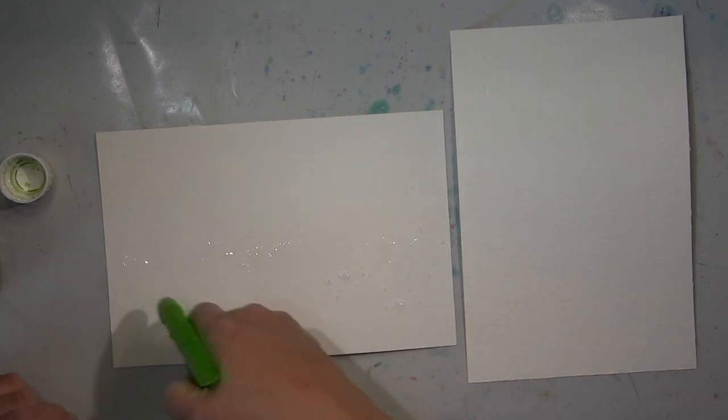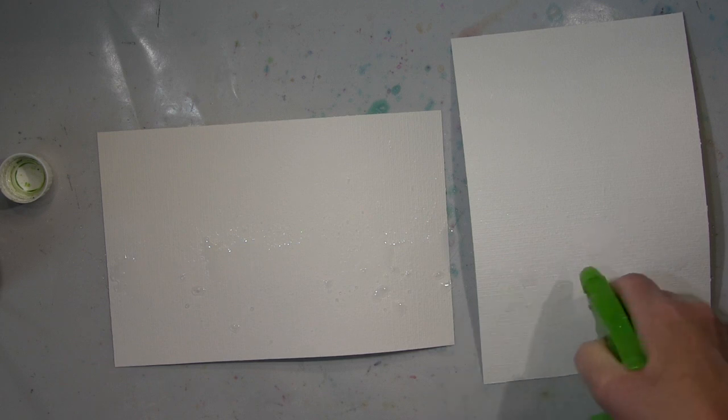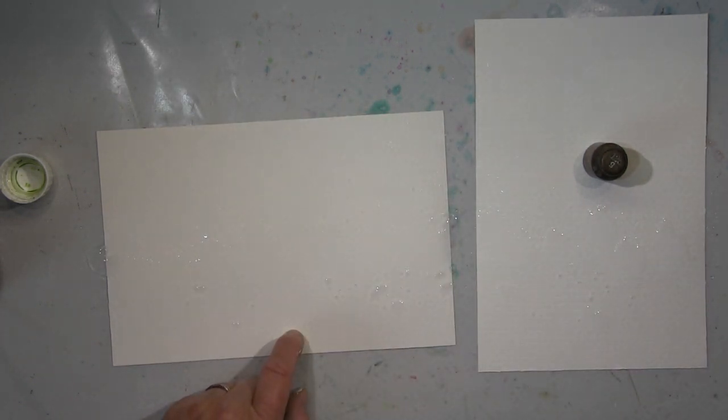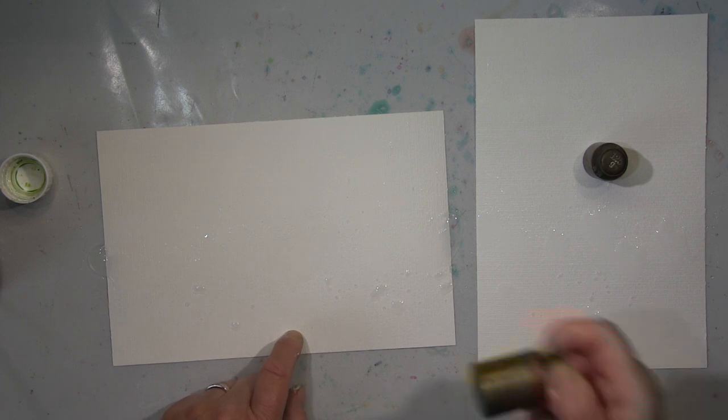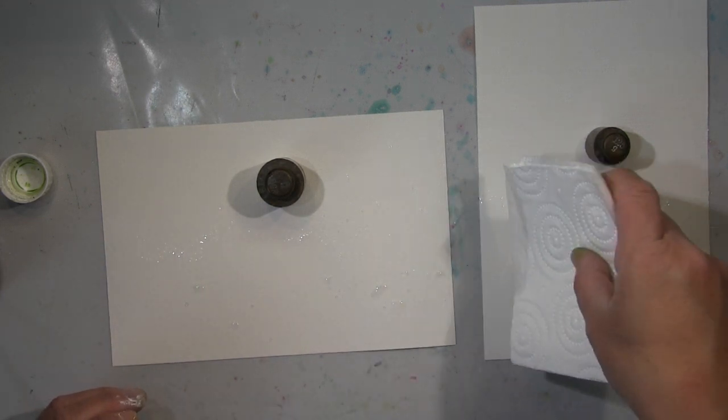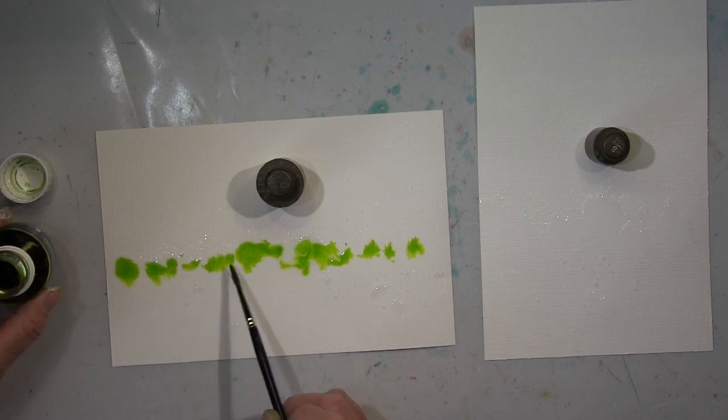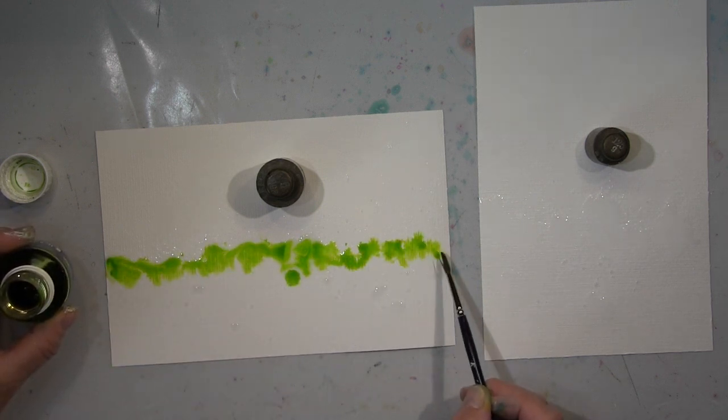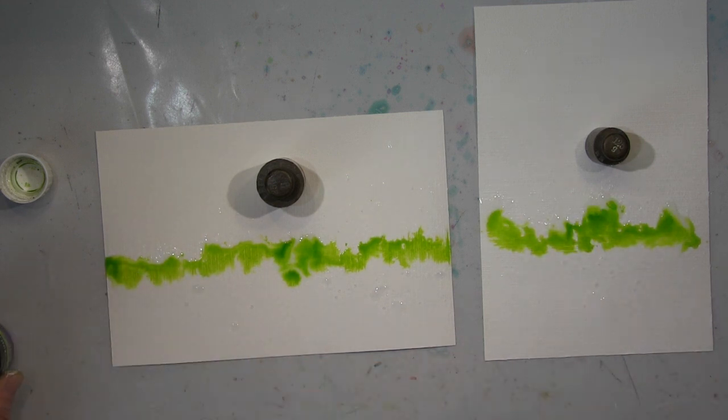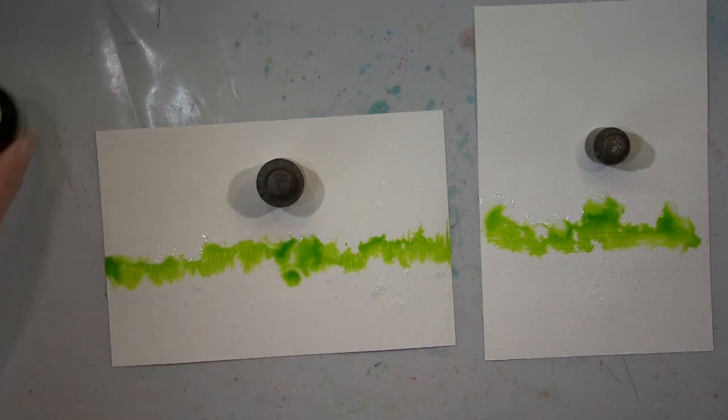Und das heißt also, jetzt wo ich die Wasserfarbe benutze, dass eben in den Tiefen, wo ich nicht mit dem Gesso gelandet bin, dass das Aquarell Medium das ich jetzt hier benutze wesentlich intensiver aufgenommen wird als an der Oberfläche, da wo das Gesso drauf ist. Das ist im Prinzip wie eine Resist-Technik. When I now go over with my watercolor media, it will definitely be more intense in the creases, the valleys, because there is no gesso, and on top there is the gesso. It's basically a resist technique, but you're using the roughness of your watercolor paper to your favor.